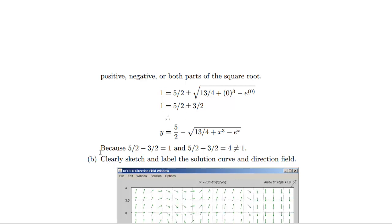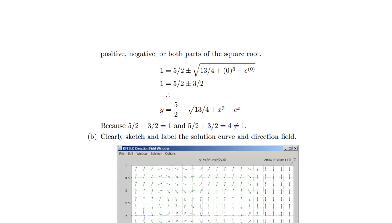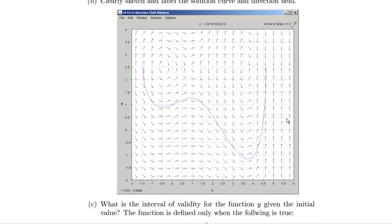Therefore, Y is equal to 5 halves minus, right? It's the minus part we want. Because, and here's that one line of exposition. Because 5 halves minus 3 halves equals 1. And 5 halves plus 3 halves is 4, which is not 1. Okay? Showing this part was very easy. We went and created it. We just input the image. I'll show you how to do that.